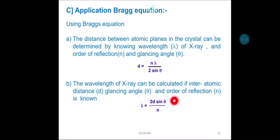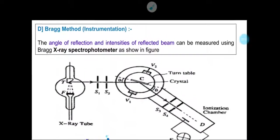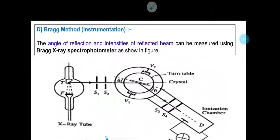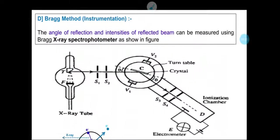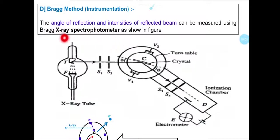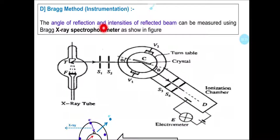We can also use the Bragg equation to determine the wavelength of X-ray radiation. If we know the distance between the two planes and the glancing angle theta, we can determine the wavelength. Now we will move to the instrumentation part — Bragg's method. For this method, the instrument developed is called an X-ray spectrophotometer. Using this method, we can determine the angle of reflection, and from that, use Bragg's equation to find the distance between two crystal planes — the lattice parameter.